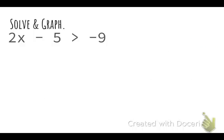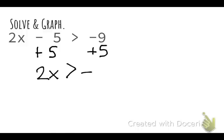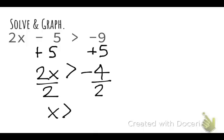Now that you have that important note, pause the video and jot down this first inequality. We'll walk through it together. If 2x minus 5 is greater than negative 9: solving this is very similar to solving equations. I'll start by adding 5 to both sides to get 2x is greater than negative 4, then divide both sides by 2 to get x is greater than negative 2.